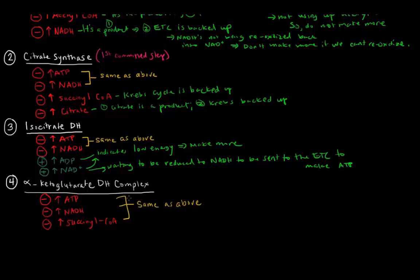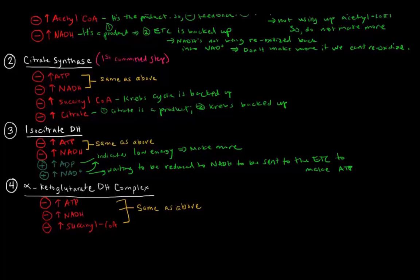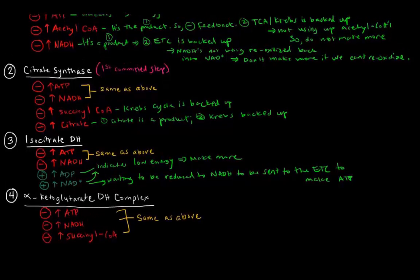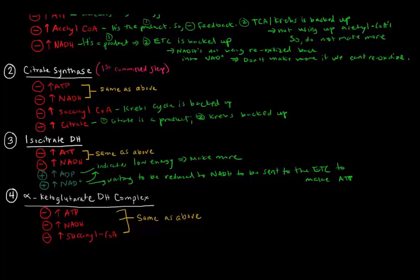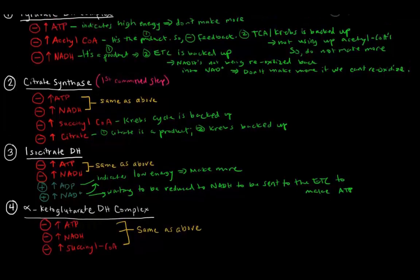Alpha-ketoglutarate dehydrogenase complex has three allosteric effectors, all of them inhibitors. These three inhibitors are the same as the inhibitors of citrate synthase, so they work for the same reason. One thing to note is that just because something logically makes sense as an allosteric effector doesn't mean it will be one. For example, isocitrate dehydrogenase is not allosterically inhibited by high levels of succinyl-CoA even though it would make sense. So just because something could potentially make sense as an allosteric effector doesn't necessarily mean it will be one.